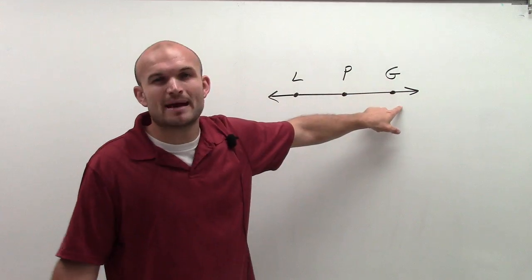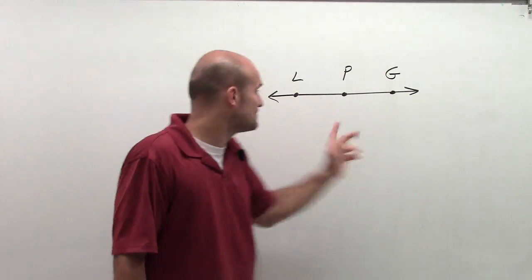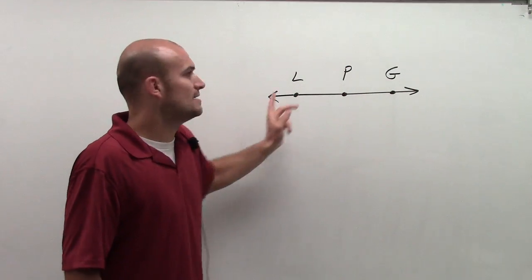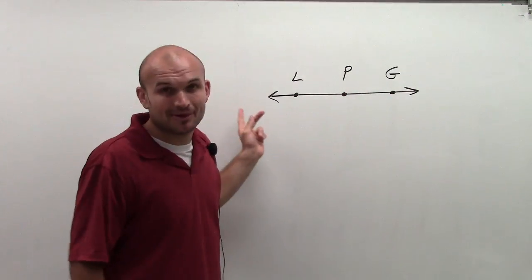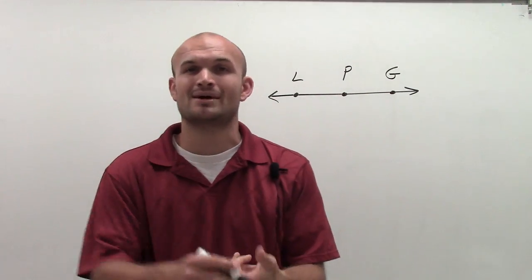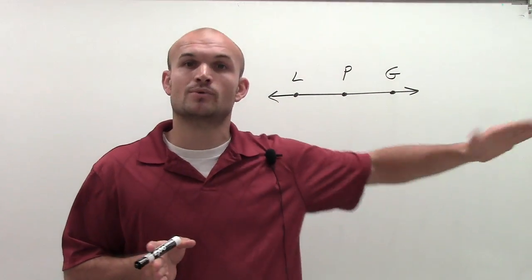If I chose G as my endpoint, yeah, I can label a ray to the left, but I can't label a ray to the right. If I chose L as my endpoint, I could not label a ray to the left, but I could label a ray to the right. Because remember, to label a ray, you have to have an endpoint and another point that that ray goes through infinitely.